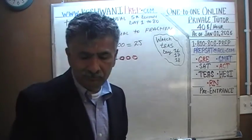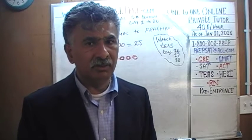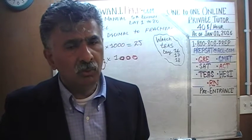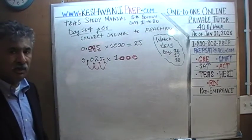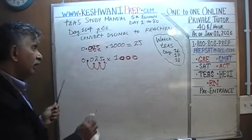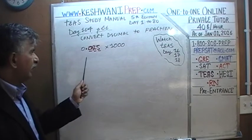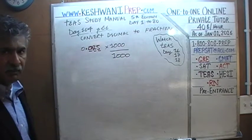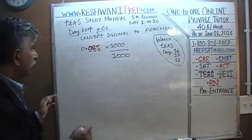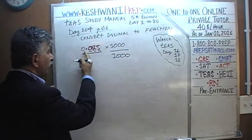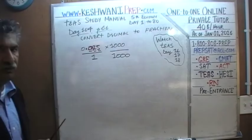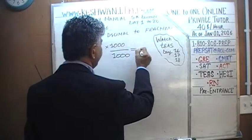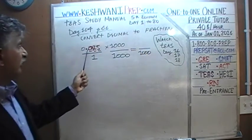But we cannot simply multiply the given quantity by 1,000 — that would change its value. We cannot change the value of the quantity that is given to us. So we have to undo it. The way we undo it: if we are going to multiply the top quantity by 1,000, we must multiply the bottom quantity by 1,000 as well. We write 0.025 as 0.025 over 1. It is still the same quantity. Now, 1 times 1,000 is 1,000 and 0.025 times 1,000 is 25.